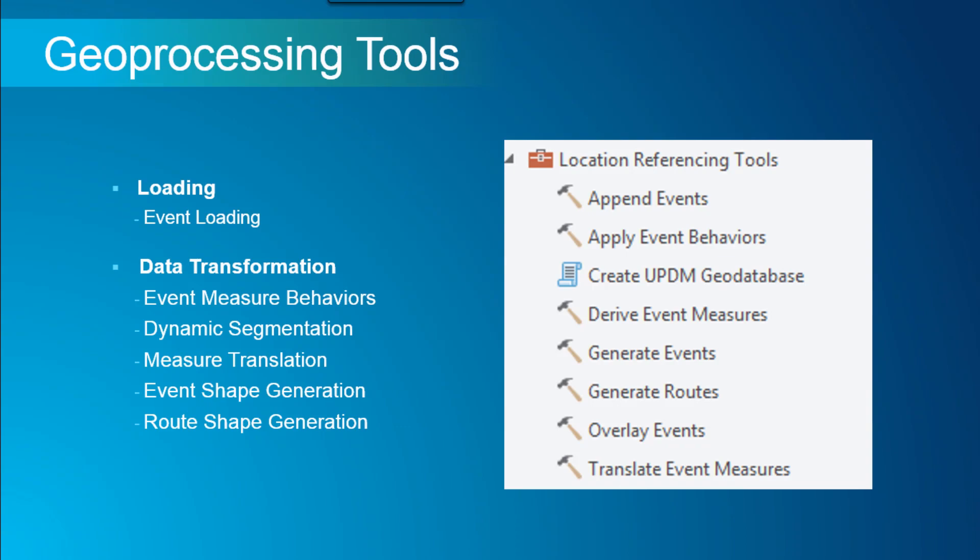We have tools to generate event shapes. If you have a spreadsheet showing only route and measure for your events without shapes, our append events geoprocessing tool can take that table and create shapes based on the route and measure information. We provide shapes for routes as well. These geoprocessing tools are scriptable and can be published as GP services.